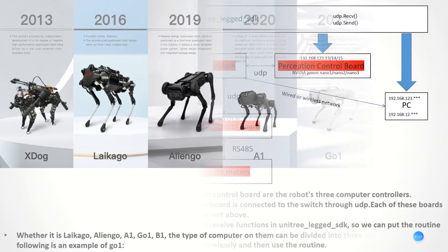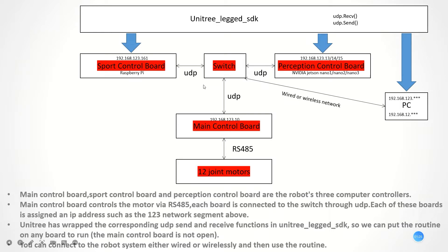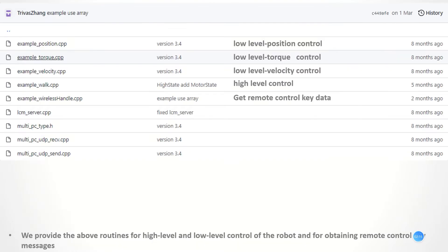Next is an example of our Go1. In this picture, we can see the Unitree-legged SDK can be divided into three main parts: main control board, sport control board, and perception control board. The main control board controls the motors via RS-485. Each board is connected to the switch through UDP, and each board is assigned an IP address such as the 192.168.123.x network segment. Unitree has implemented the corresponding UDP send and receive functions in Unitree-legged SDK, so we can put the routine on any board to run, except the main control board. Note that the main control board is not open. You can connect to the robot system either wired or wirelessly, and then use the routine. We also provide routines for high-level and low-level control of the robot dog, as well as for obtaining remote control messages.